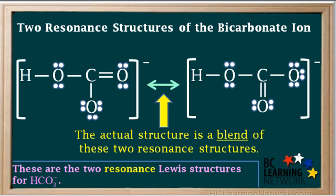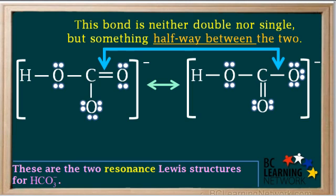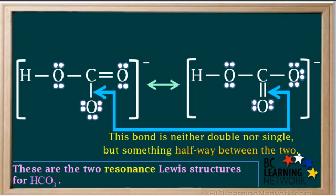It turns out that the actual structure of this ion is a blend of these two structures. For example, the bond between the carbon and the oxygen on the right is neither a double bond nor a single bond, but something halfway between the two. Similarly, the bond between the carbon and the oxygen on the bottom is neither a single bond nor a double bond, but something halfway between those two.